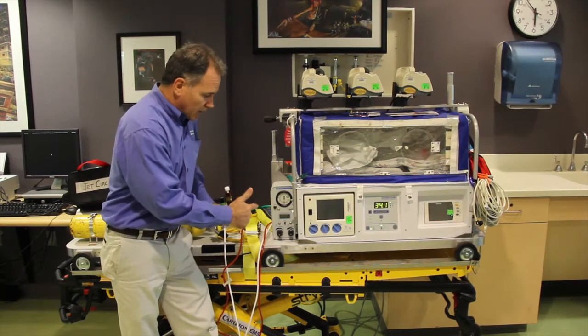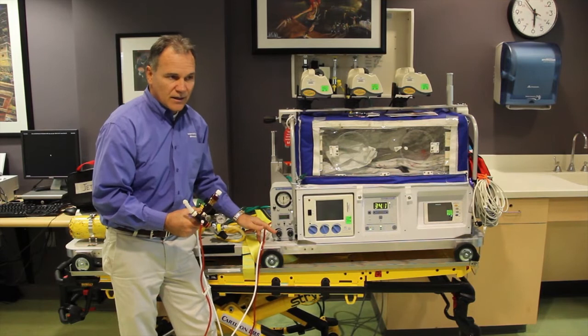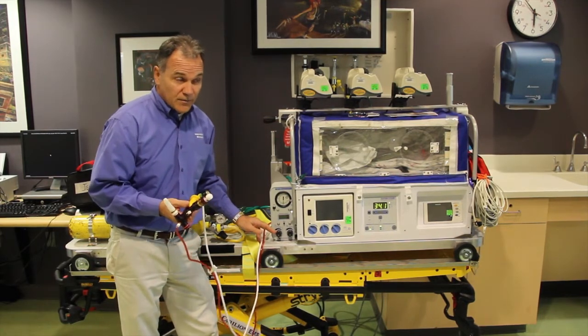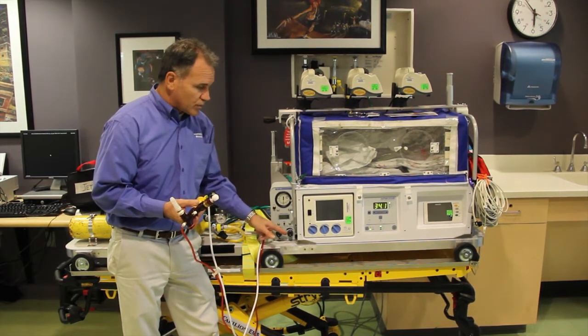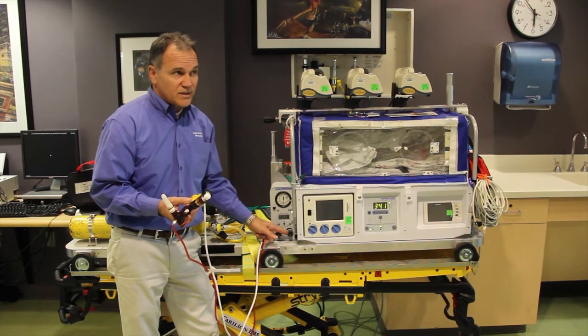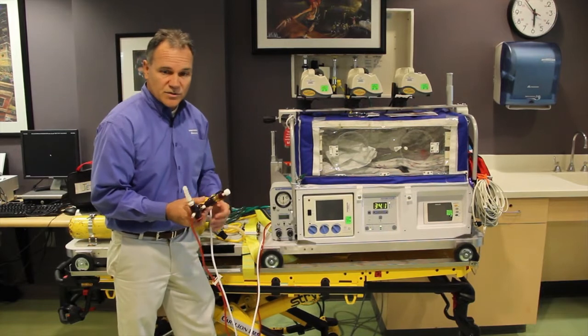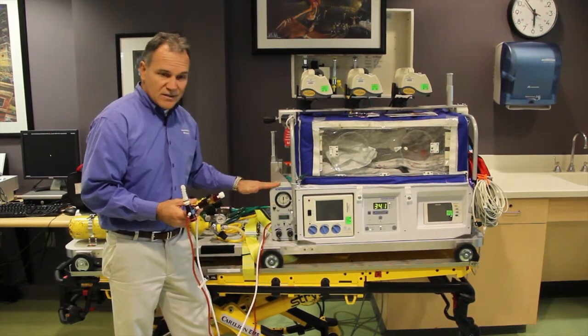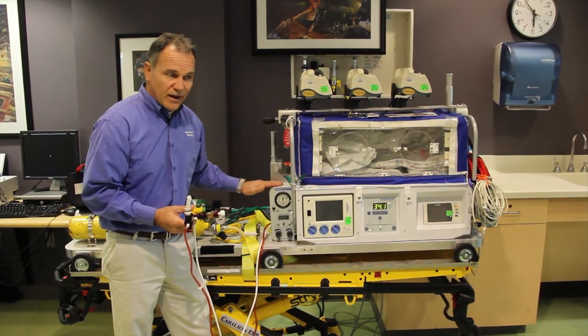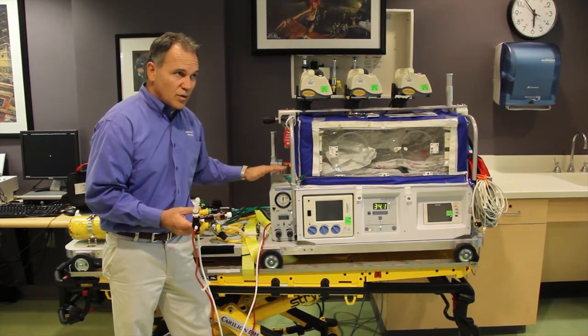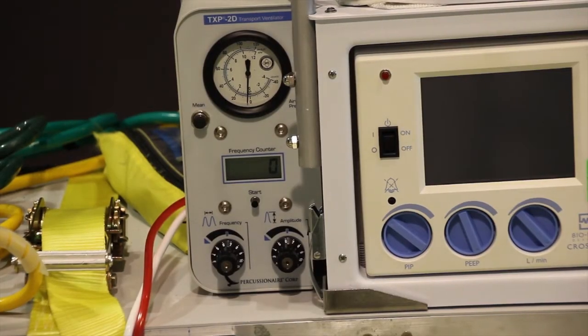I'm going to give you a scenario where we're going to take a patient off an oscillator and convert them over to the TXP. If they're on an oscillator with a Hertz of about 10, a Hertz of 10 would be a rate of 600. To convert them over here, we'll typically drop the rate down by maybe 25 to 30 percent, because the difference between this device and the oscillator is this has passive exhalation as opposed to the oscillator having active exhalation. So we want to slow the rate down to give the patient time to exhale.